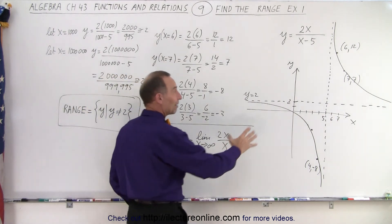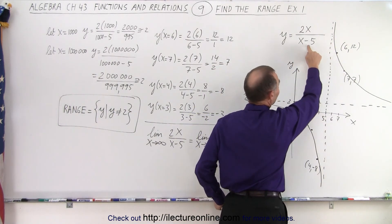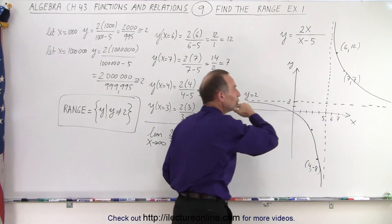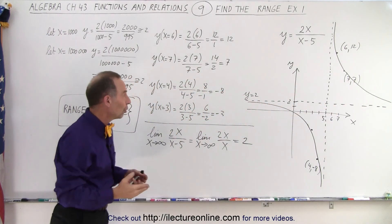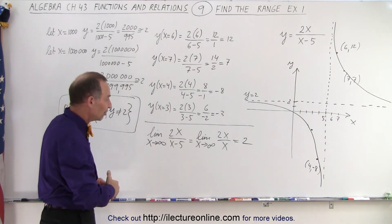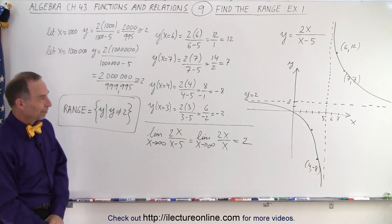It does help to graph the function, it does help to realize that x cannot equal 5, that comes out of the denominator, and then we realize that y cannot equal 2, because it can only be 2 when x becomes infinitely large, either in the positive or the negative direction, so therefore, y will never be 2, because x cannot ever become infinity. And that is how it's done.